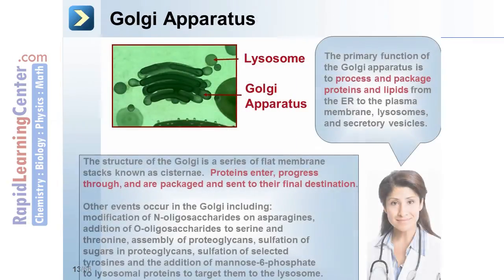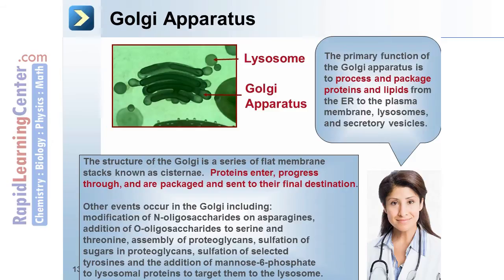The primary function of the Golgi apparatus is to process and package proteins and lipids from the ER to the plasma membrane, lysosomes, and secretory vesicles. The structure of the Golgi is a series of flat membrane stacks known as cisternae. Proteins enter, progress through, and are packaged and sent to their final destination.